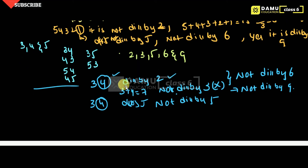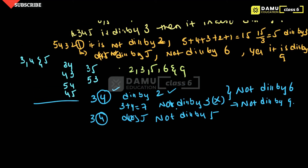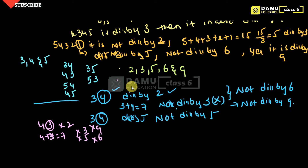Now check 43. Units digit is 3, which is not even, so not divisible by 2. Sum of digits: 4+3=7, not divisible by 3. Units digit is 3, not 0 or 5, so not divisible by 5. Since it is not divisible by 2 and not divisible by 3, it is not divisible by 6. It is also not divisible by 9.